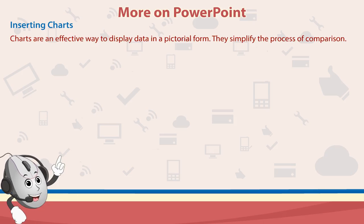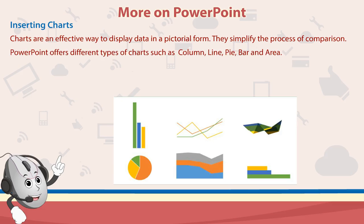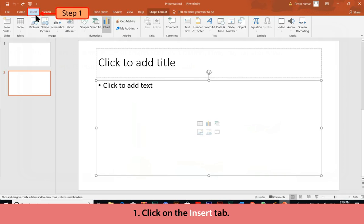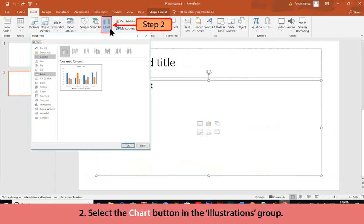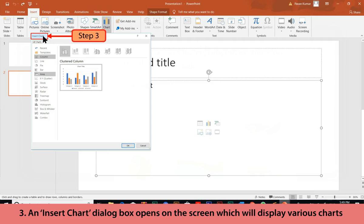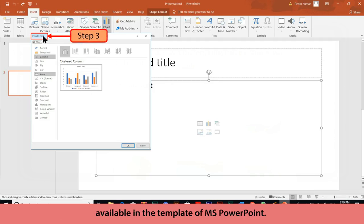Inserting Charts: Charts are an effective way to display data in a pictorial form and simplify the process of comparison. PowerPoint offers different types of charts such as column, line, pie, bar, and area. Follow these steps to insert a chart: Click on the Insert tab, then select the Chart button in the Illustrations group. An Insert Chart dialog box opens displaying various charts available in the PowerPoint templates.